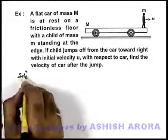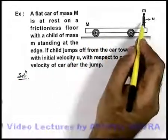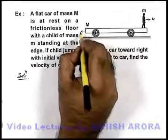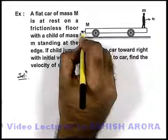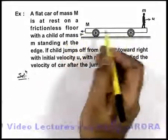Now in this situation, if we solve the problem, we can state that due to jumping of the boy, the car will attain a velocity say v in backward direction, and to conserve momentum, the car must recoil.